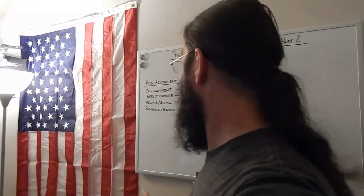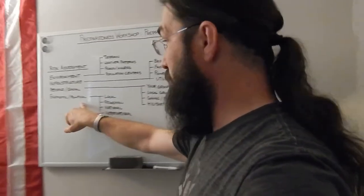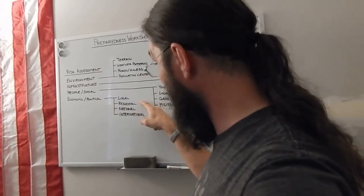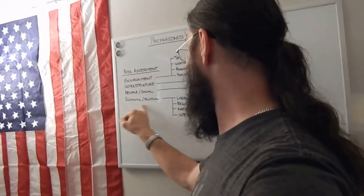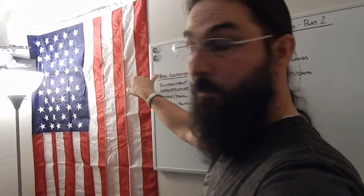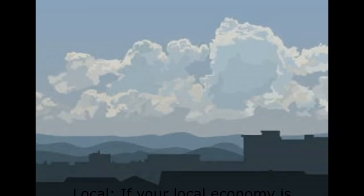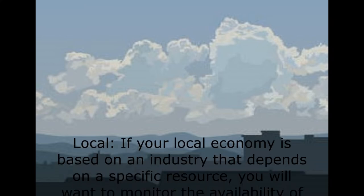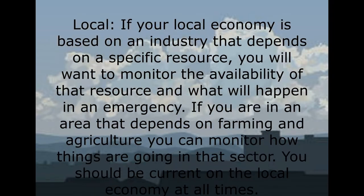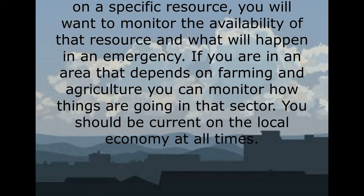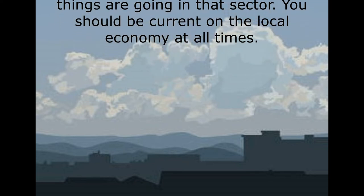On your risk assessment for economic and political factors, you're going to want to look at economic and political situations locally, regionally, nationally, and internationally. If your local economy is based on an industry that depends on a specific resource, you will want to monitor the availability of that resource and what will happen in an emergency. If you're in an area that depends on farming and agriculture, you can monitor how things are going in that sector. You should be current on the local economy at all times.